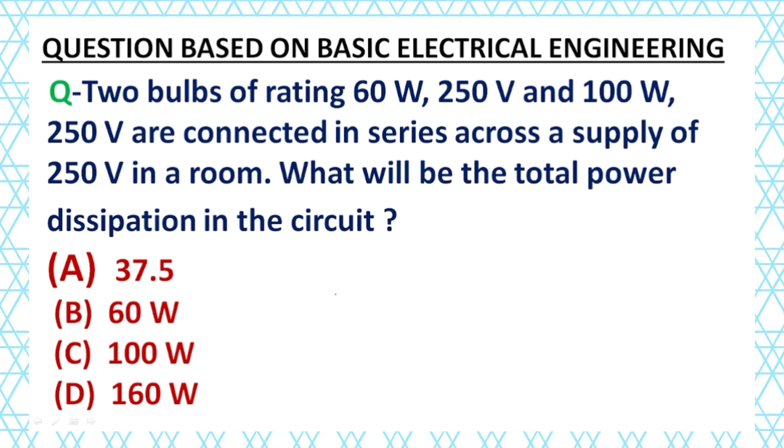Two bulbs of rating 60W, 250V and 100W, 250V are connected in series across a supply of 250V in a room. What will be the total power dissipation in the circuit?